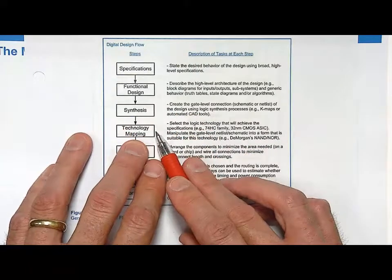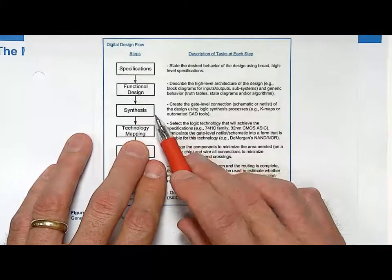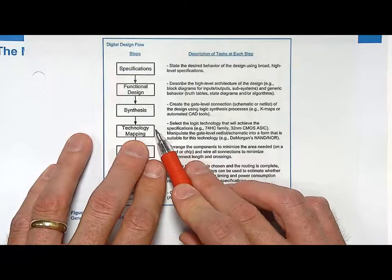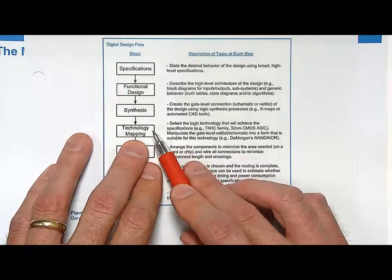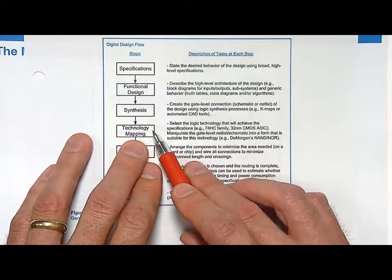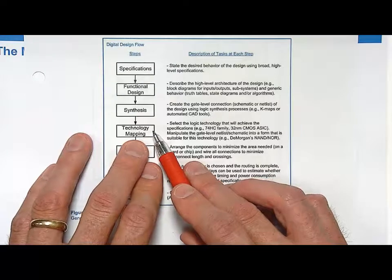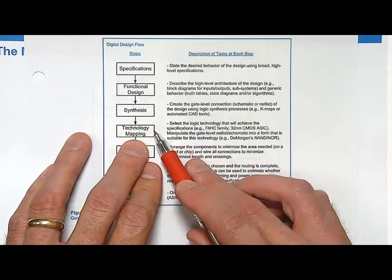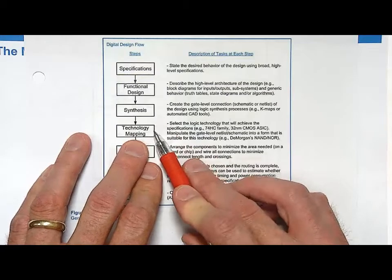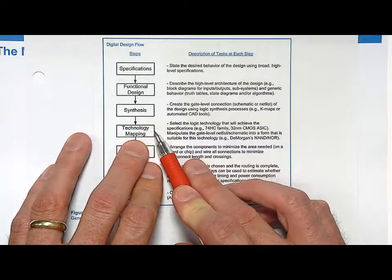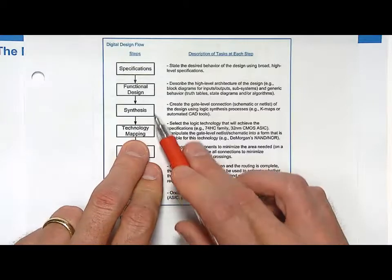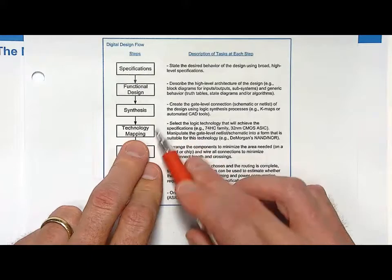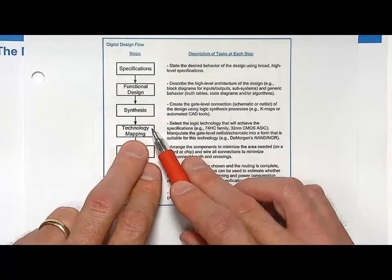Then you do this step called technology mapping. When you have an AND gate, what is the technology you use to implement that AND gate? Are you going to implement it with a 7400 series part? Is that 7400 series part going to be TTL? Is it going to be CMOS? Or are you going to implement this with a 22 nanometer cutting-edge CMOS process from some vendor? The AND gate can be implemented with a large number of technologies. So what technology do you choose?